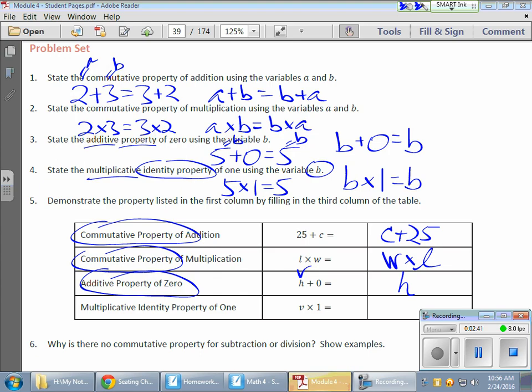And the multiplicative identity property of one is very similar to that. It doesn't matter what I have for the value of v, if I'm multiplying it by one, I will wind up once again with v. And if you'd like to substitute a number for that, that's fine.